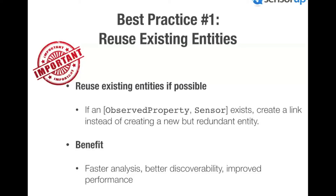Some best practices: First, when you have existing entities in the system, reuse them. For example, you don't need multiple redundant temperature ObservedProperties. The beauty of SensorThings API is you can easily reuse entities via links, unlike many other APIs that have redundant information. Reusing entities enables faster analysis, better discoverability — for example, with one click you can get all temperature DataStreams — and improved performance from an API with over 15 years of R&D behind it.